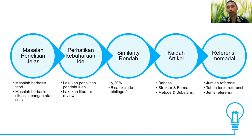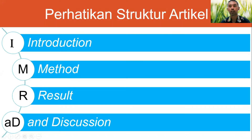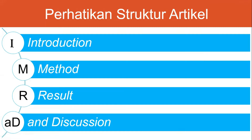Ini hal-hal yang perlu diperhatikan di awal ketika kita menulis sebuah artikel. Ketika kita sudah paham bahwa isunya jelas, idenya bagus, dan berbasis masalah atau teori, kita lanjut ke proses menyusun artikel. Sebuah artikel menggunakan struktur IMRAD: Introduction, Method, Result, and Discussion. Bagian penting lainnya adalah judul dan abstrak yang berada di bagian atas artikel.